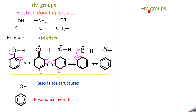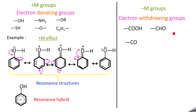Next, minus M groups are called electron withdrawing groups. Examples include: −COOH, −CHO, −COO⁻, −CN (cyano group), and −NO2 group. These are all negative mesomeric effect groups.